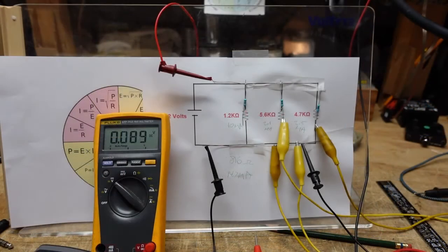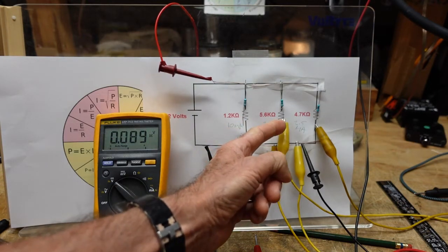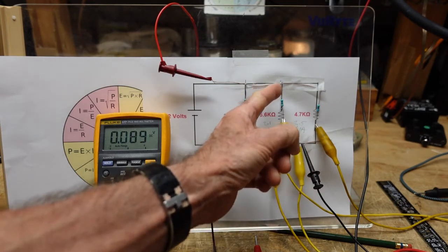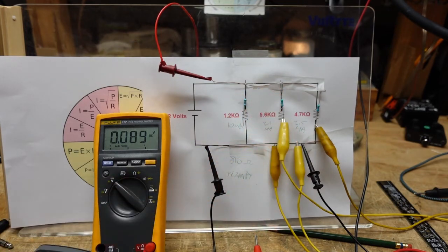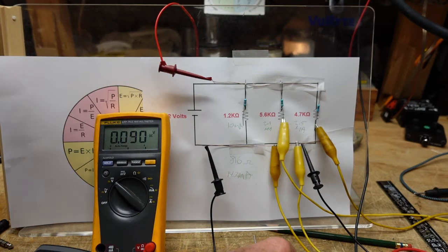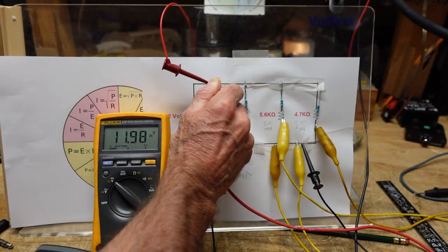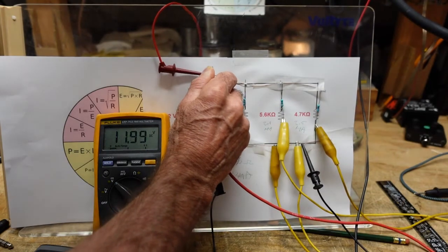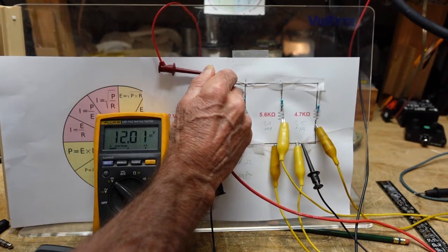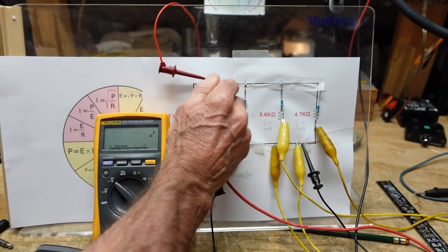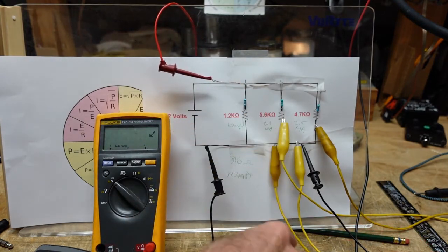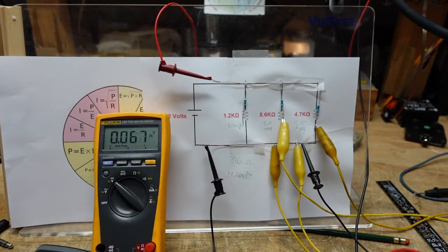This unholy mess you see before you is necessitated by the fact that we're going to have to break each one of these resistors in order to measure the current through it. The first thing I want to demonstrate is that we do have 12 volts here. So we have 12 volts going in.